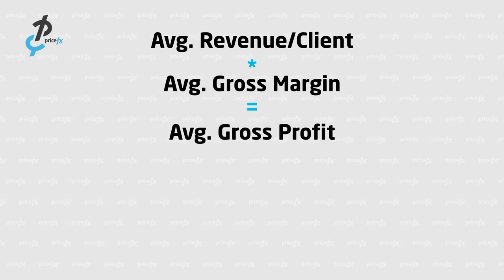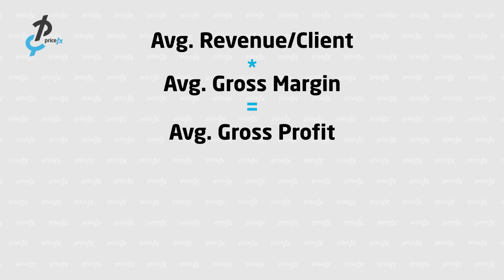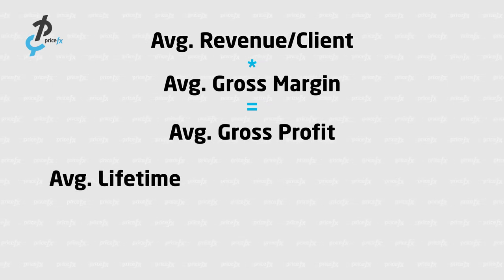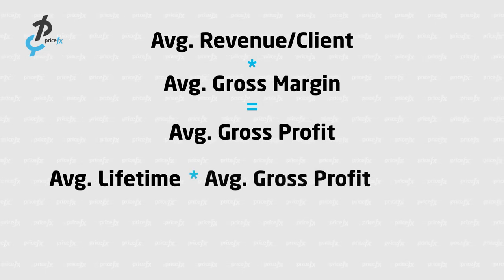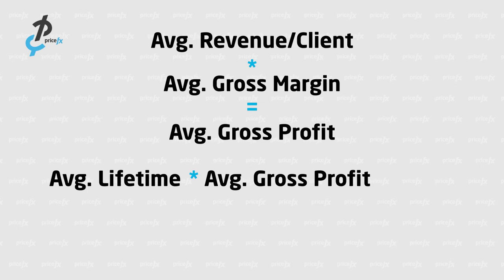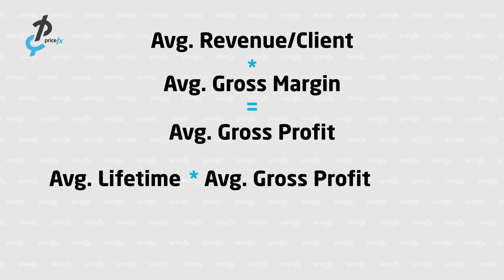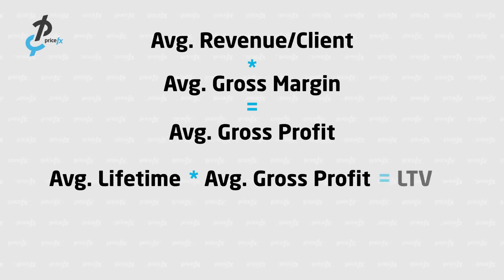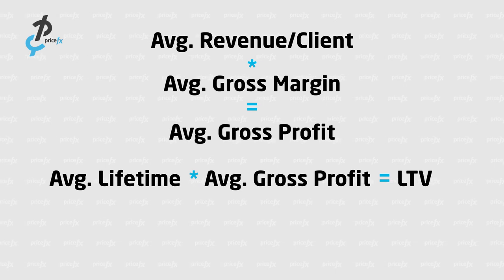This is just one year's average gross profit, so then we have to look at how long that client will stay with us. We look at the average lifetime — let's say it's four years. We multiply that average gross profit on an annual basis by the length of time they're going to stay with us, four years. We also take into account the retention rate, because not every customer stays with us forever, and that gives us our lifetime value.